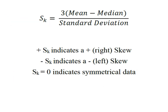In order to calculate this version of Pearson's coefficient, we simply take the mean and figure out how far the mean is from the median. We take that distance and multiply it by 3. Once we've done that, we convert it into units of standard deviation by dividing by the standard deviation. A positive Pearson's is a right skew, a negative Pearson's is a left skew, and a Pearson's equal to zero gives us symmetrical data.